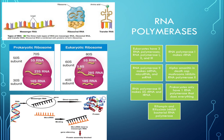RNA polymerases take DNA and make RNA. You have many types of RNA, including ribosomal RNA which helps make up ribosomes, transfer RNA which brings amino acids to the mRNA, and messenger RNA. In this video we'll also mention a couple of other types of RNA that you might not have heard about.